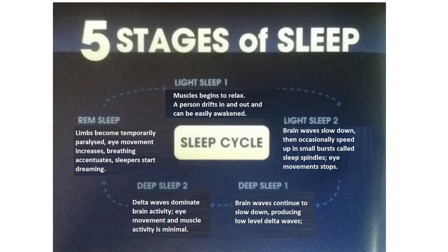There are five stages of sleep. The first is light sleep, stage one, in which muscles begin to relax and a person drifts in and out and can be easily awakened.